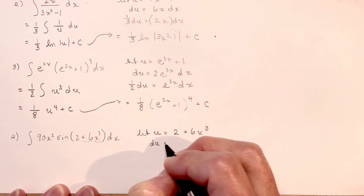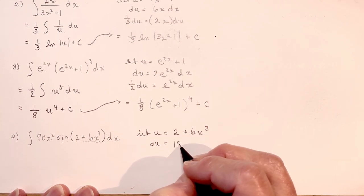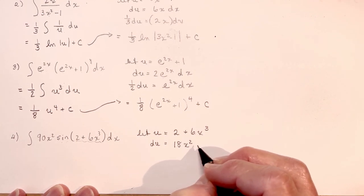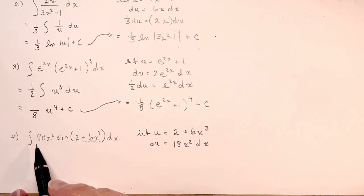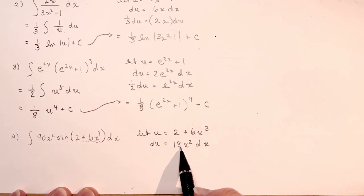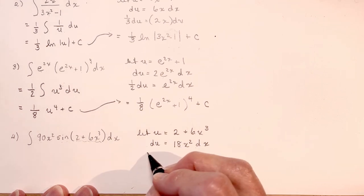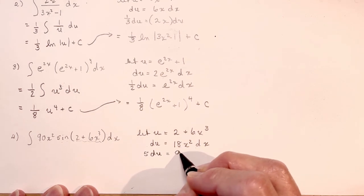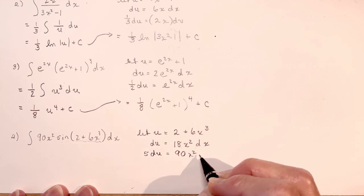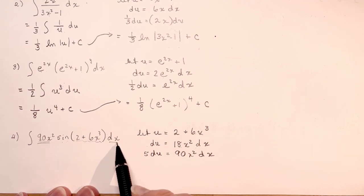So du is going to be 18x squared dx. But I want 90x squared, and 90 is 5 times 18. So if I multiply this side by 5, I get 5 du equal to 90x squared dx. And that's exactly what I want to replace.